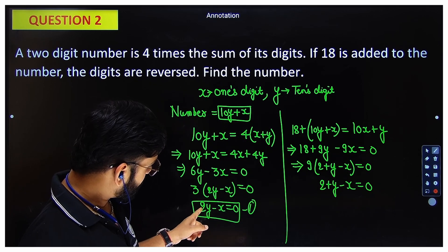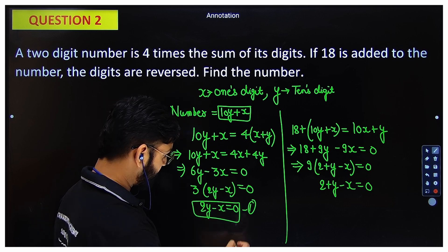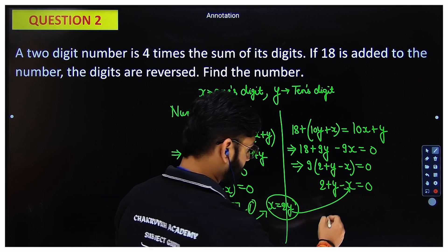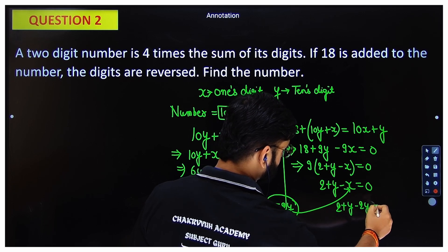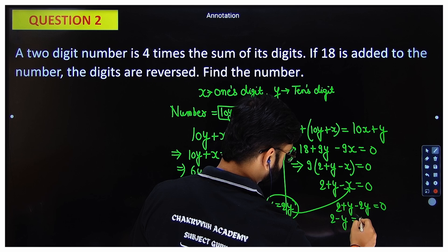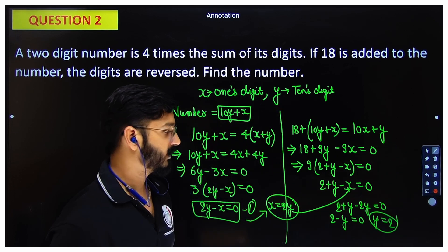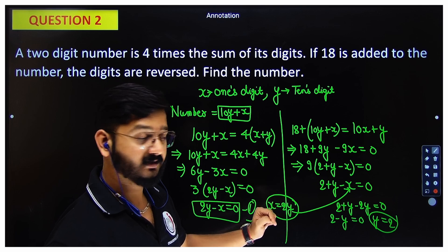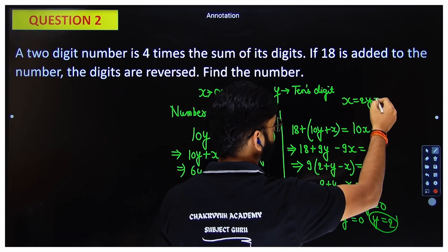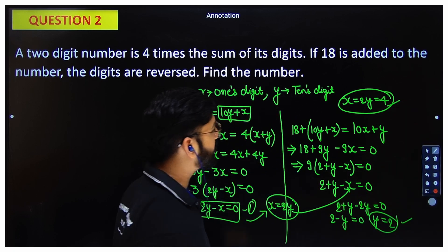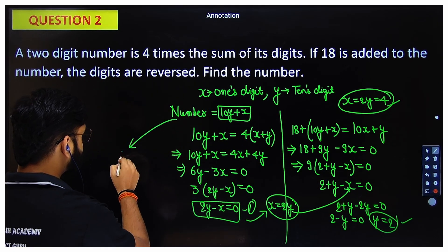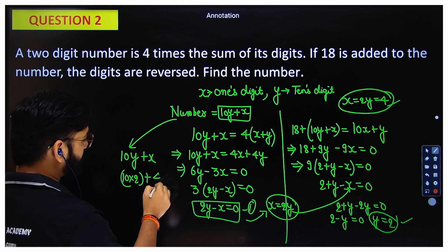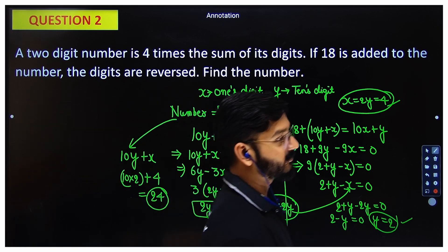From the first equation, 2x minus y equals 0, so y equals 2x. Substituting into the second equation: x minus 2x plus 2 equals 0, which gives minus x plus 2 equals 0, so x equals 2. Then y equals 2 times 2 equals 4. The original number is 10x plus y = 10 times 2 plus 4 = 24.